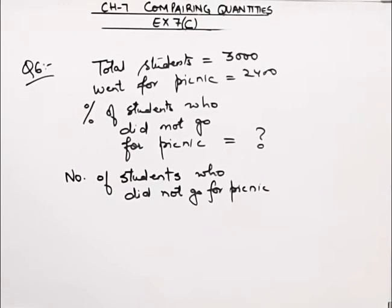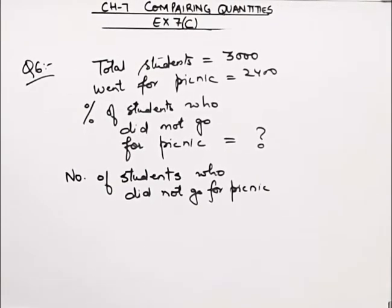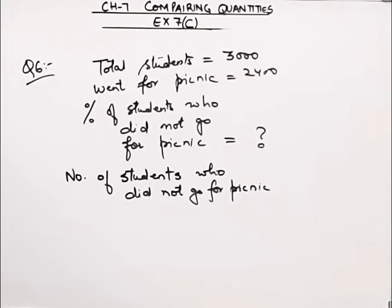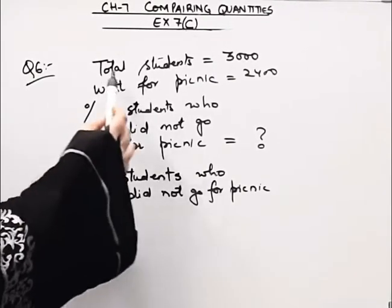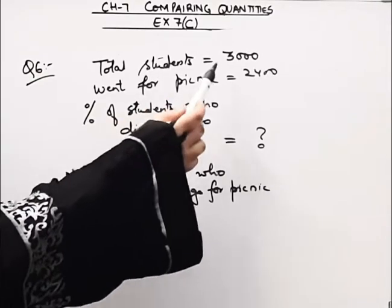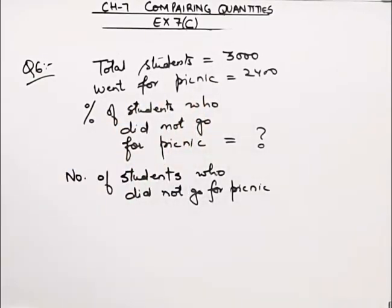Hello everybody, welcome to Braino Solution. Today we will be doing question number 6 from exercise 7c. In this question, it is given that the total number of students in a class in school is 3000.